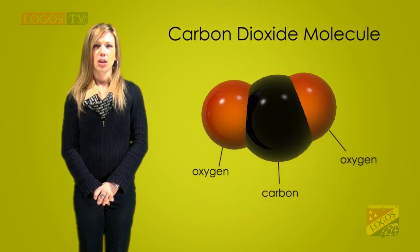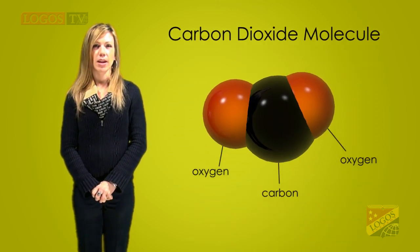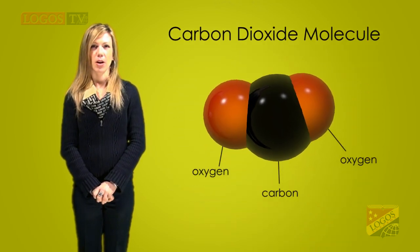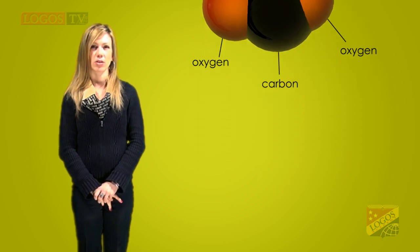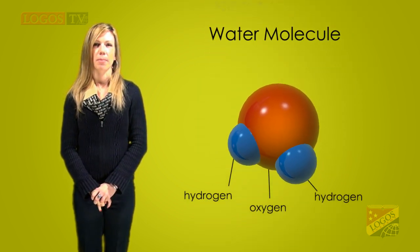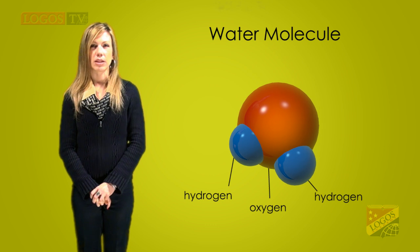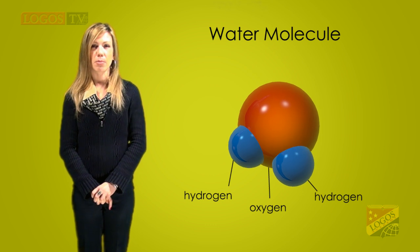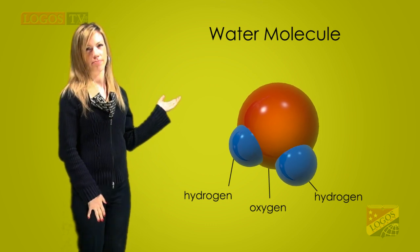A molecule of carbon dioxide has one atom of carbon and two atoms of oxygen. Water is also a chemical compound. A water molecule is made of one atom of oxygen and two atoms of hydrogen.